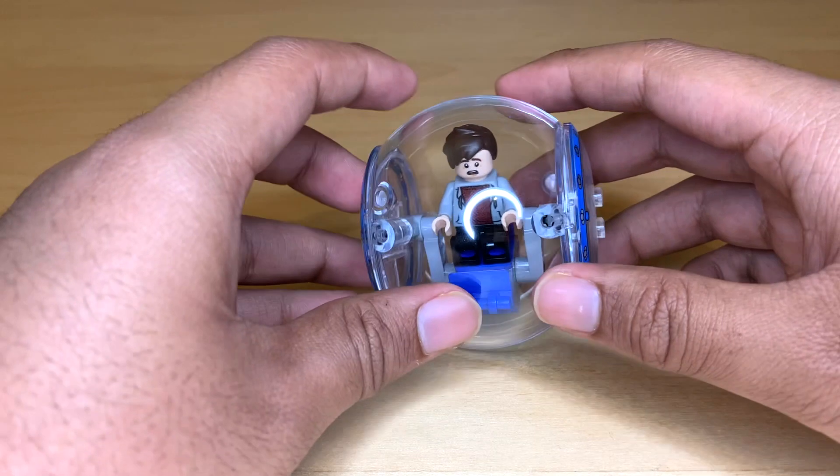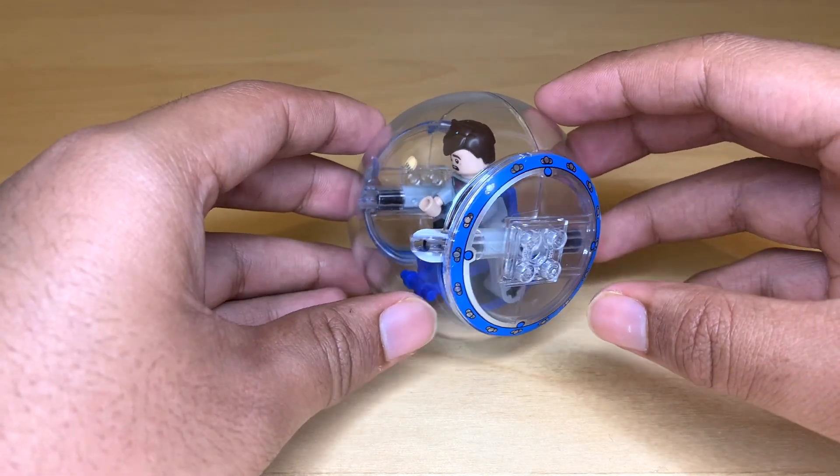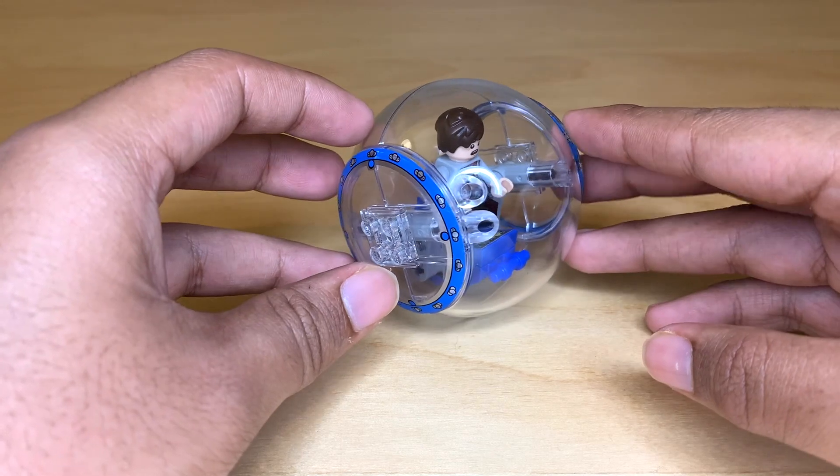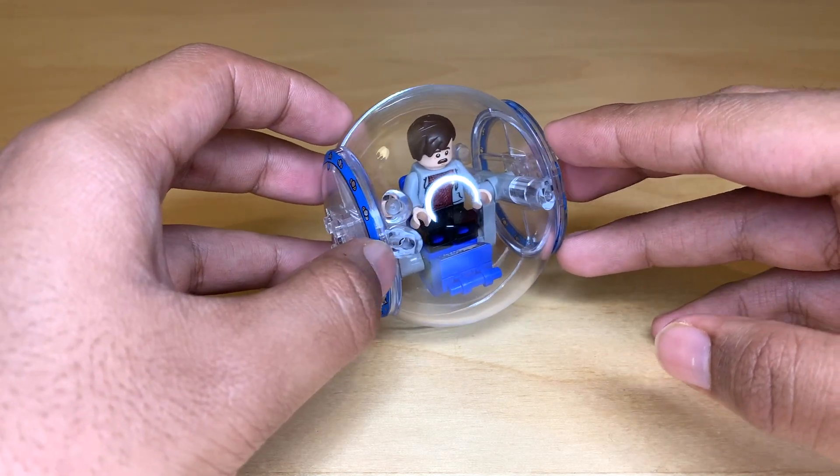This is a regular gyrosphere. This comes in the Indominus Rex vs. Ankylosaurus set, but LEGO's gyrosphere designs have remained pretty consistent from 2015 through 2021.